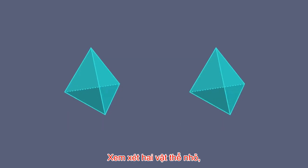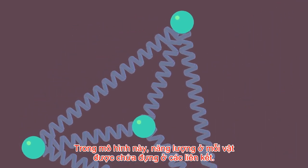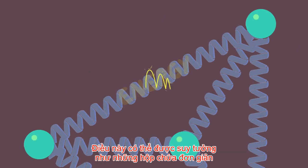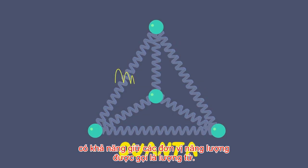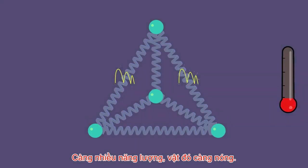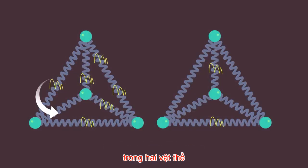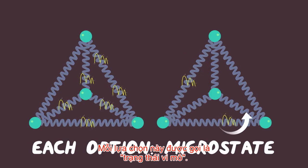Consider two small solids, which are comprised of six atomic bonds each. In this model, the energy in each solid is stored in the bonds. Those can be thought of as simple containers which can hold indivisible units of energy, known as quanta. The more energy a solid has, the hotter it is. There are numerous ways that the energy can be distributed in the two solids and still have the same total energy in each — each of these options is called a microstate.